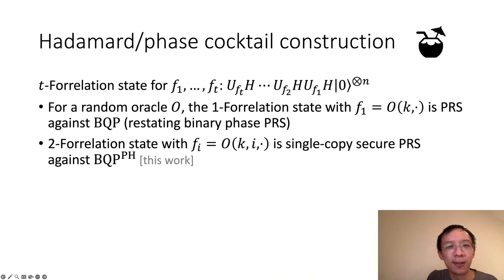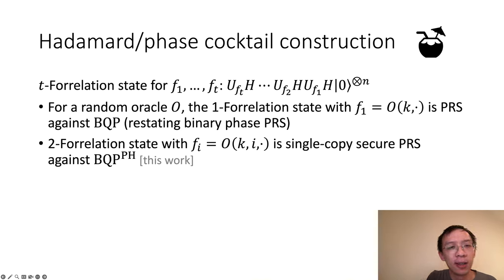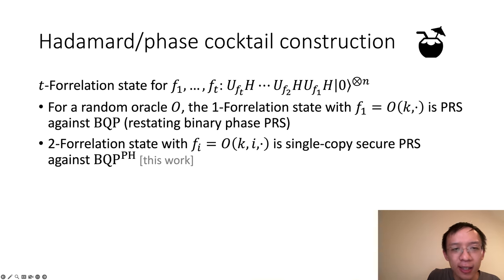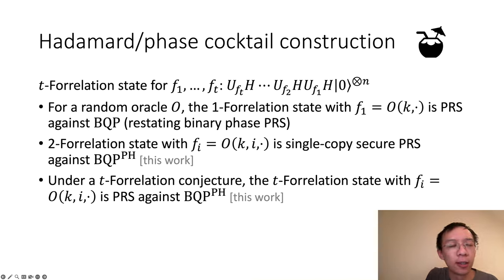In this case, since we are considering a random oracle, you can think of the adversary as a BQP machine that can query any PH statement about the random oracle. In particular, this adversary will be able to break the one-forrelation state for any construction, but if you look at the two-forrelation state, it is in fact secure. Finally, we also introduce a new T-forrelation conjecture under which the T-forrelation state with f_i's being random oracles is in fact multi-copy-secure pseudorandom states against BQP with a PH oracle.